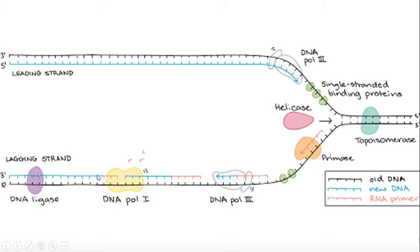Doosri strand jo ban rahi hai, uske fragments ban rahe hain. Yahaan se primer laga hua hai, yahaan se DNA Polymerase start lega, yahaan tak ek fragment bana lega. Iske baad yeh peeche jayega, yeh primer laga hua hai, phir yahaan se start lega — is tarah yeh process discontinuously, chote chote fragment ki surat mein ban raha hai. Isko lagging strand bolta hai.